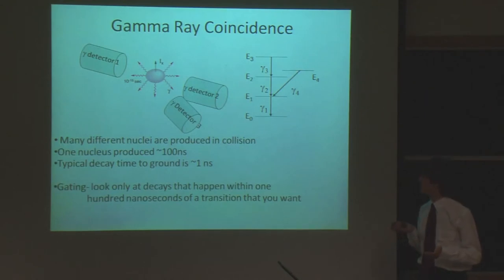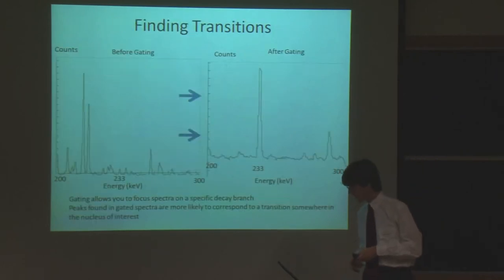Gating will only show gamma rays that are in series, not in parallel. So if we gate on gamma 2, we'll see gamma 3 and gamma 1, but not gamma 4. So this is also useful for determining where a branch leaves the main band.